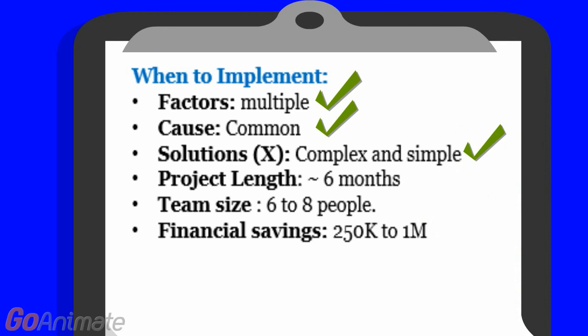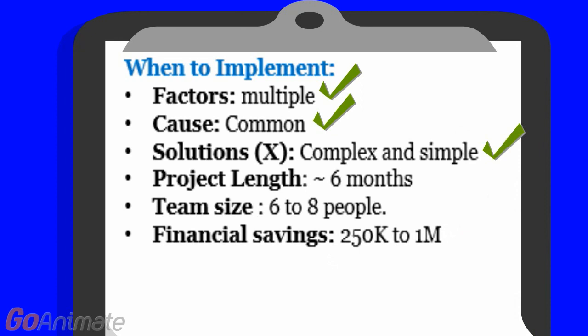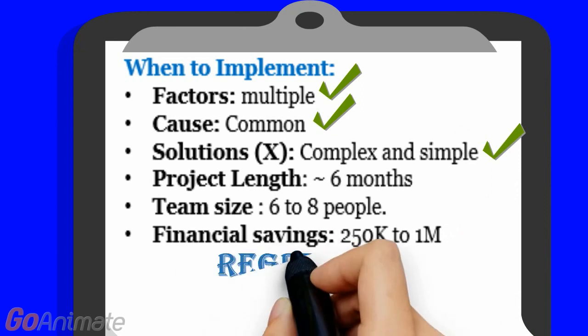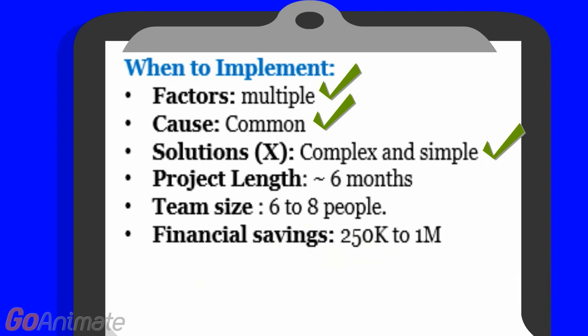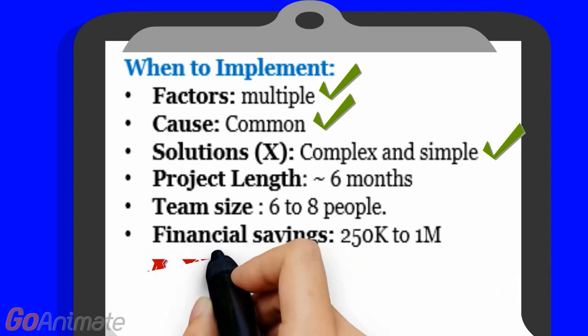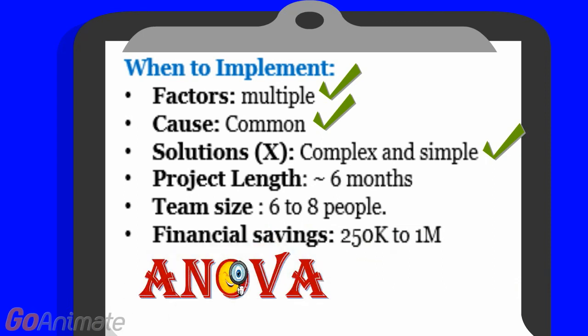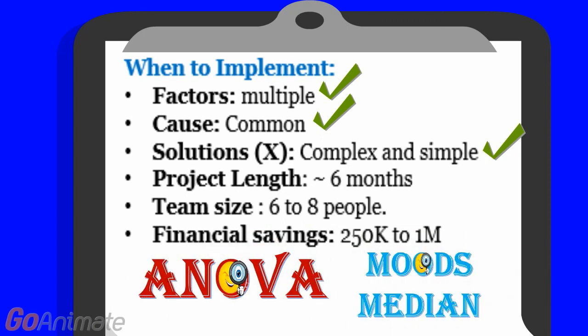Improving process capability requires a significant process change in order to shift the mean or decrease variability, often requiring DOE and other inferential statistical tests such as regression analysis, hypothesis testing — for example, ANOVA or Mood's median test — and many others.